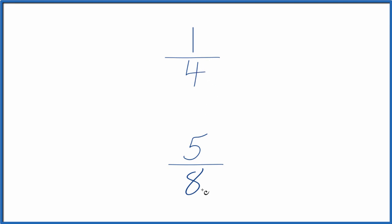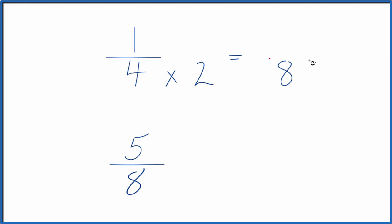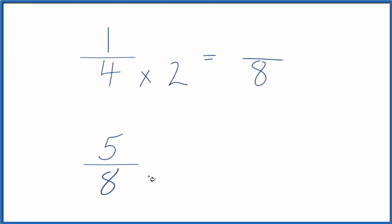I can see that four goes into eight two times, so I'm just going to multiply four times two. Four times two is eight, so that's my denominator here, and this is already eight, so let's just keep this the same, five-eighths. And we have the same denominator.